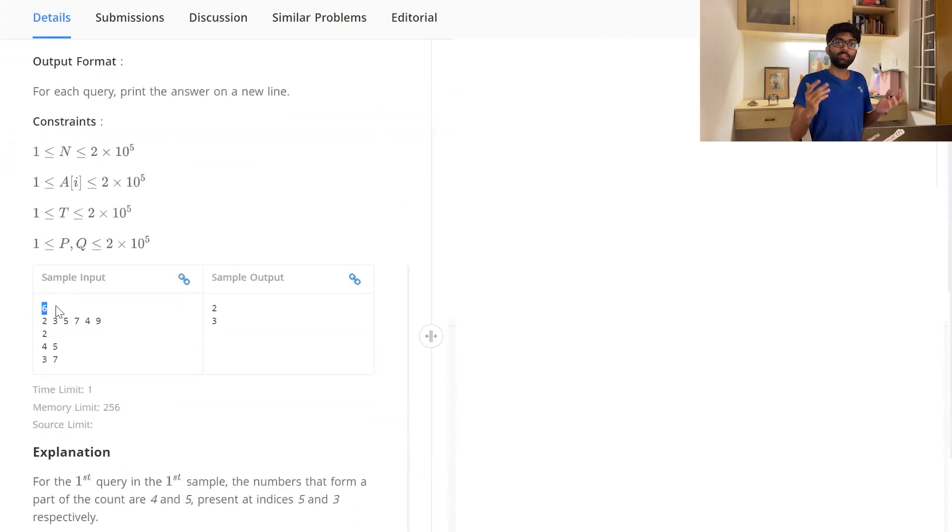N is going to be the number of numbers in the array. In this case, 6. Our array is going to be populated by 6 numbers. This is the array itself. 2 is the number of queries. Each query is going to have two numbers, that's P and Q. How many numbers are divisible by 4? That is just 4. How many numbers in this array are divisible by 5? That is just 5. So our output is going to be 2 straight away.